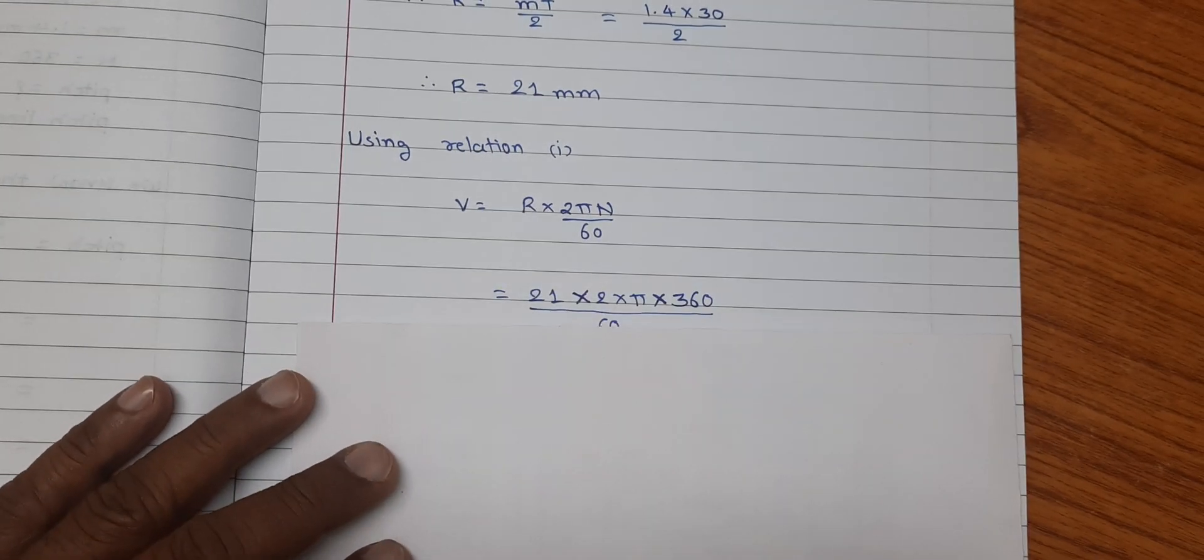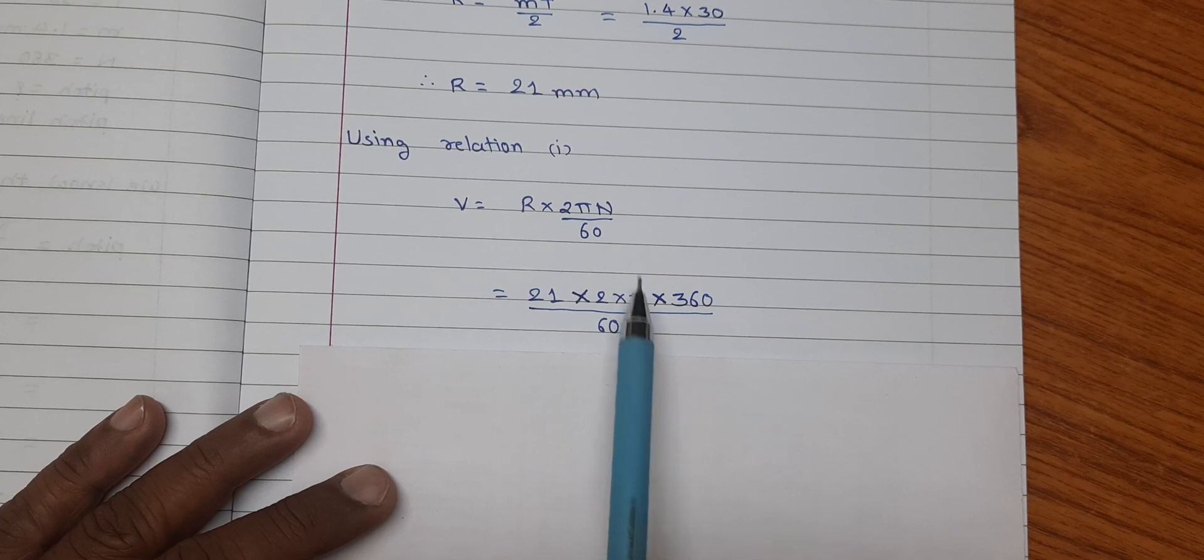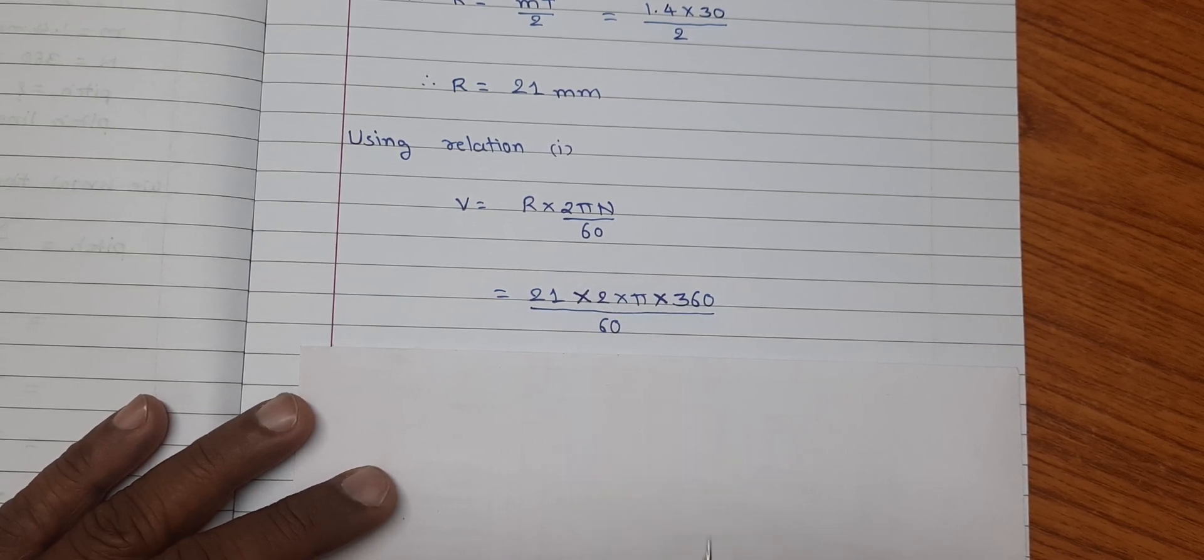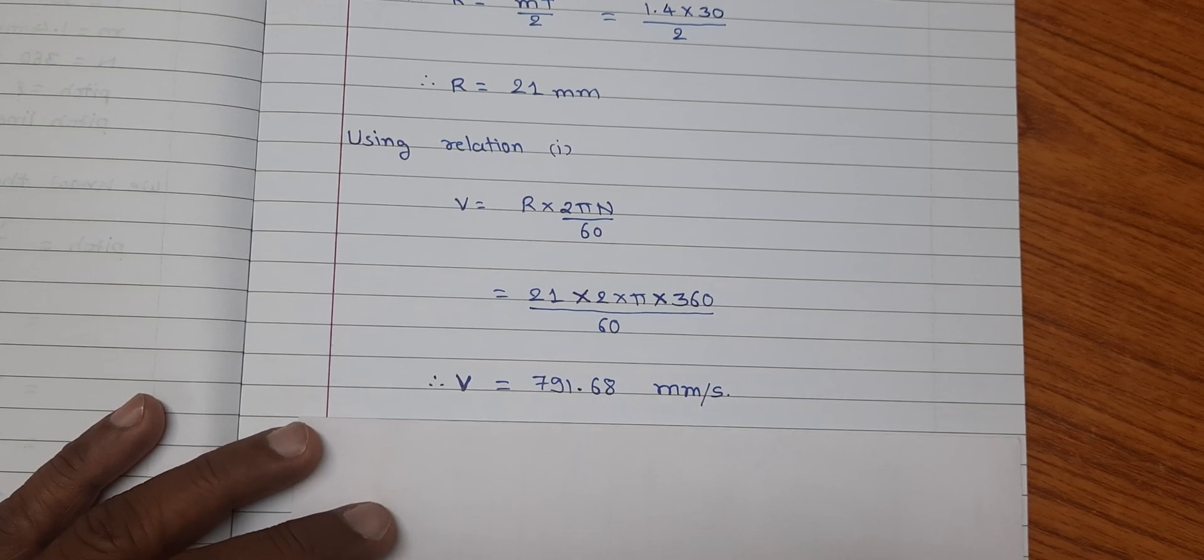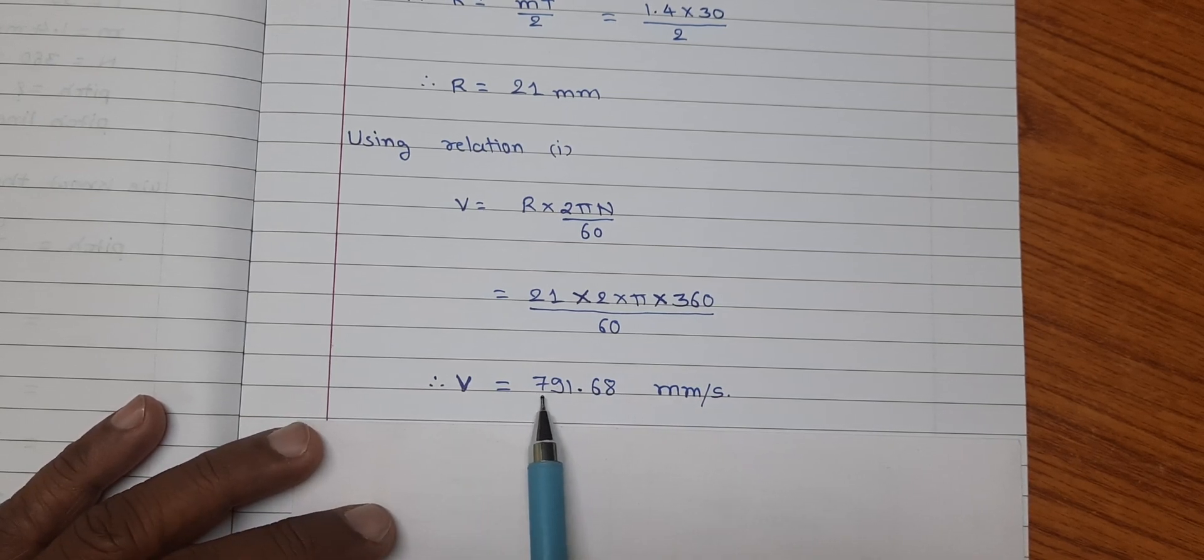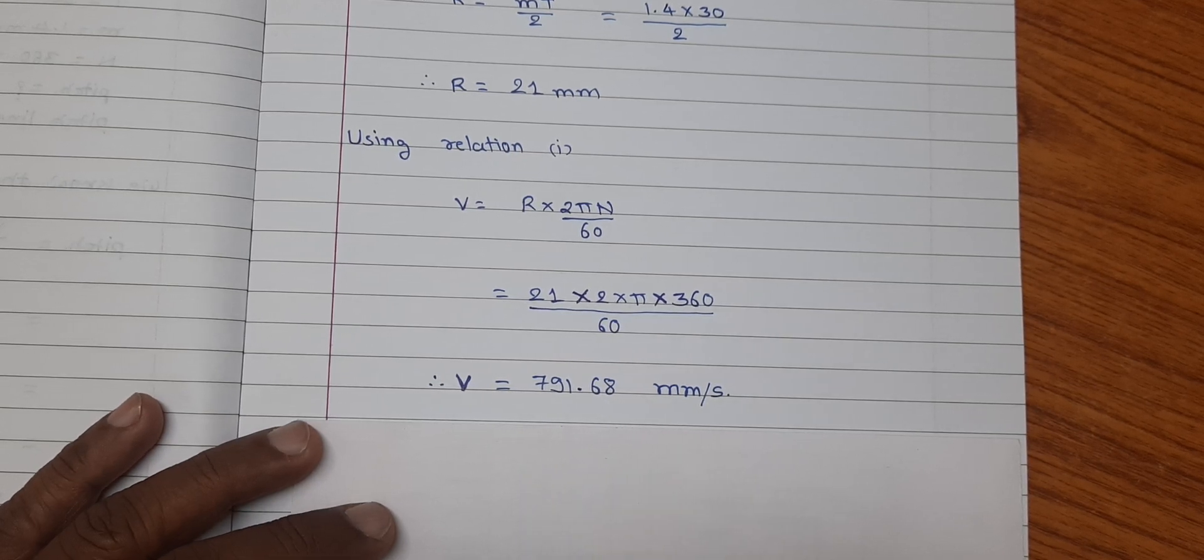Here, r is 21, which gives us pitch line velocity v is equal to 791.68 mm per second.